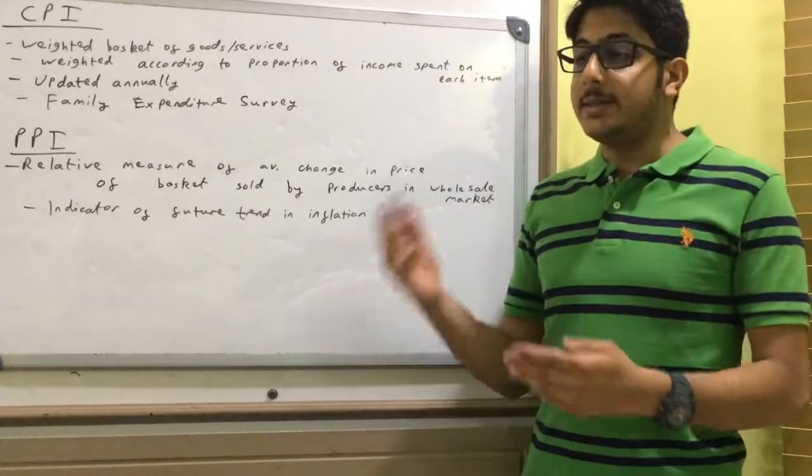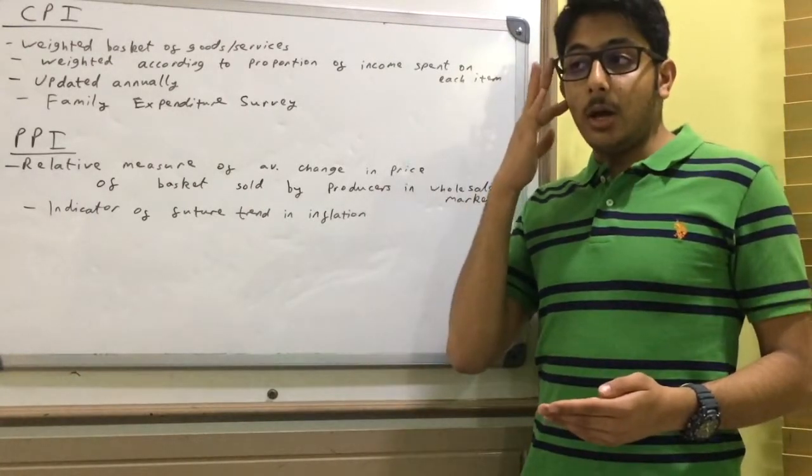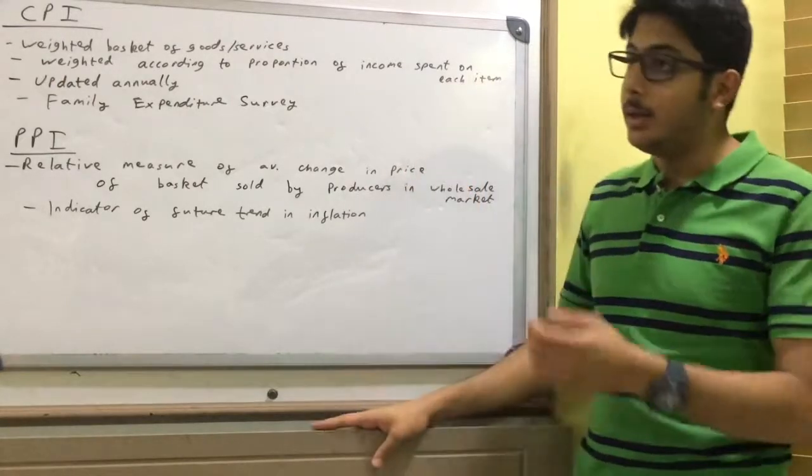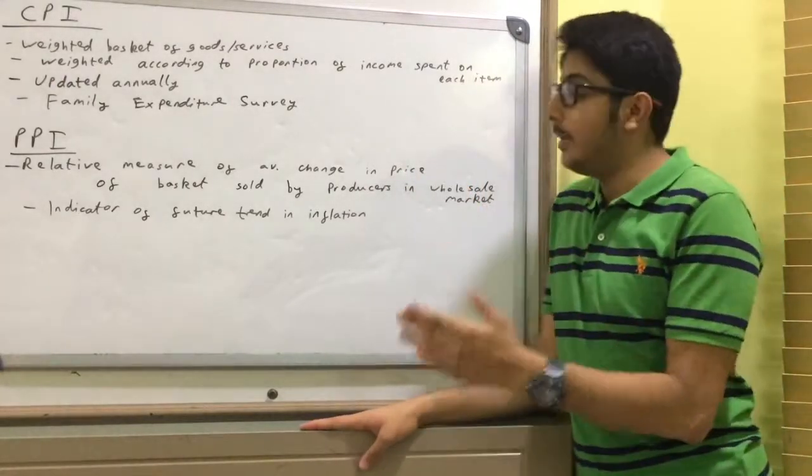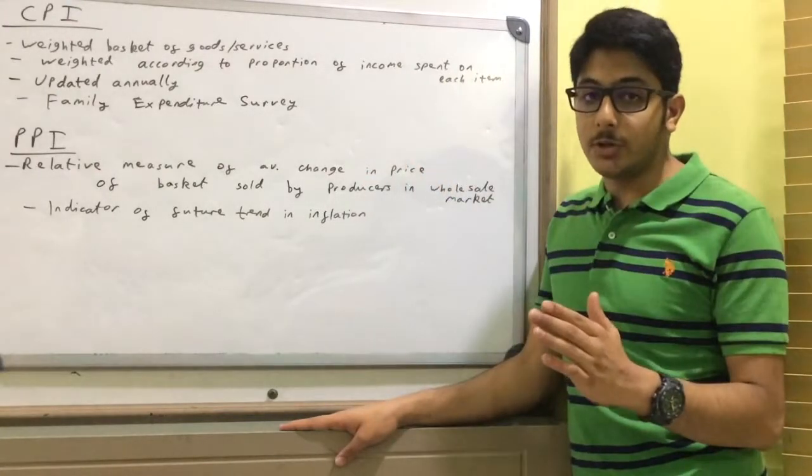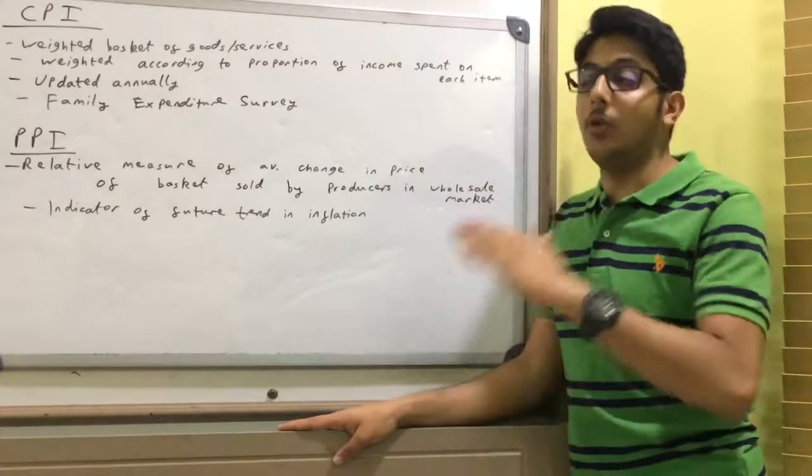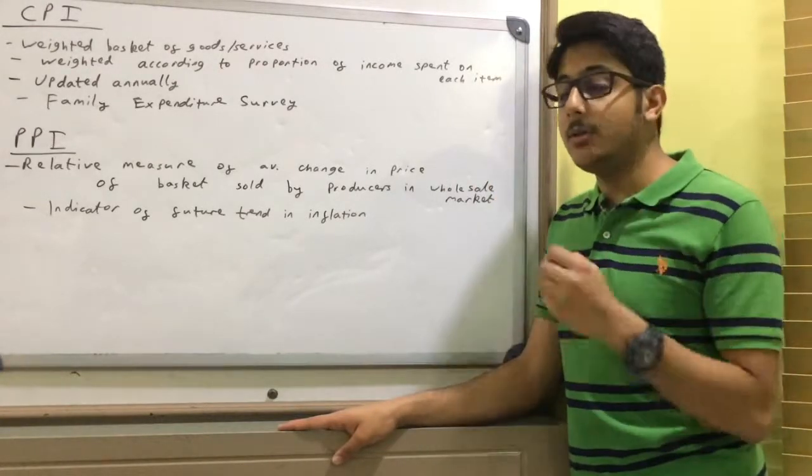The Producer Price Index measures goods and services at all levels of production, all levels of output, so it also measures unfinished goods and services.